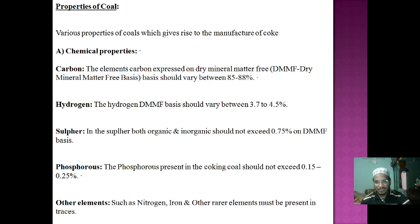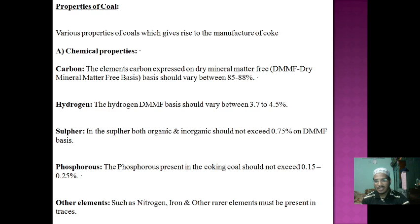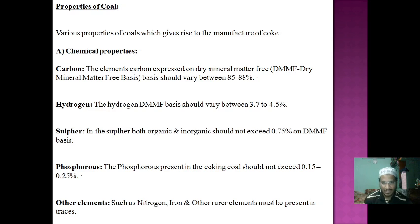For hydrogen, the DMMF percentage is 3.75 to 4.5 percent. For sulfur, the property should not exceed 0.75 percent. For phosphorus, the capacity is between 0.15 to 0.25 percent and should not exceed 0.25 percent. Other elements such as nitrogen and iron are rare elements and must be present only in trace amounts — these are rarely used in the chemical properties of coal.